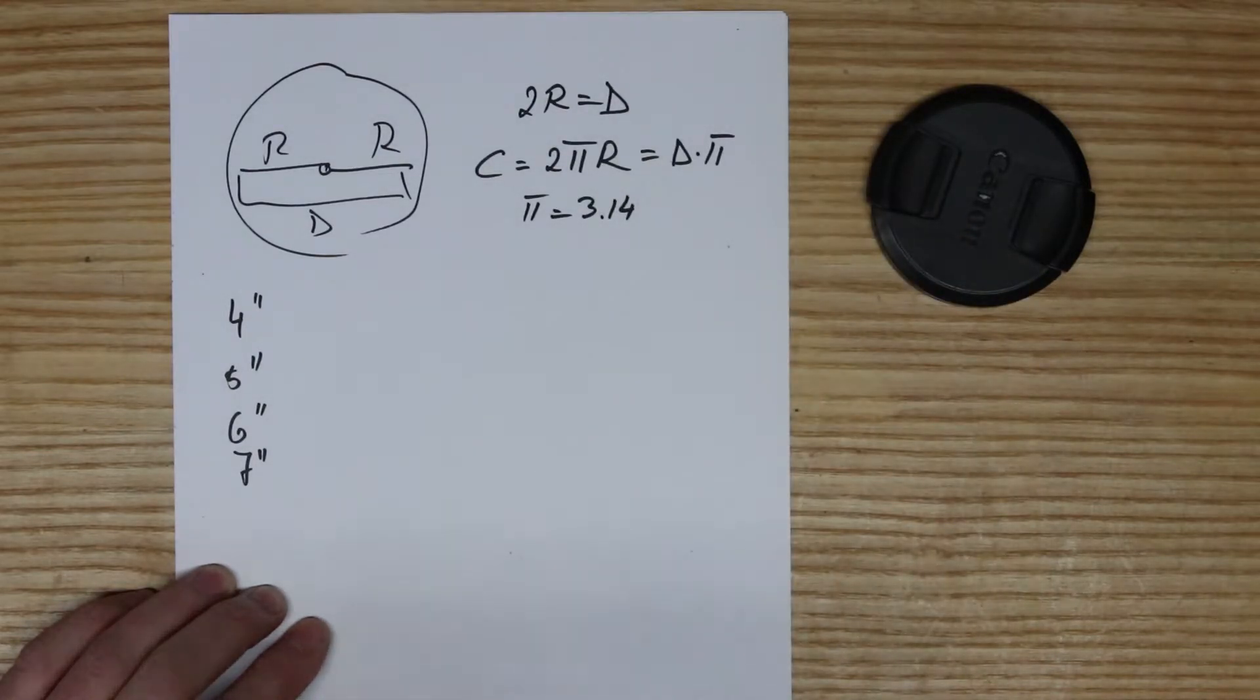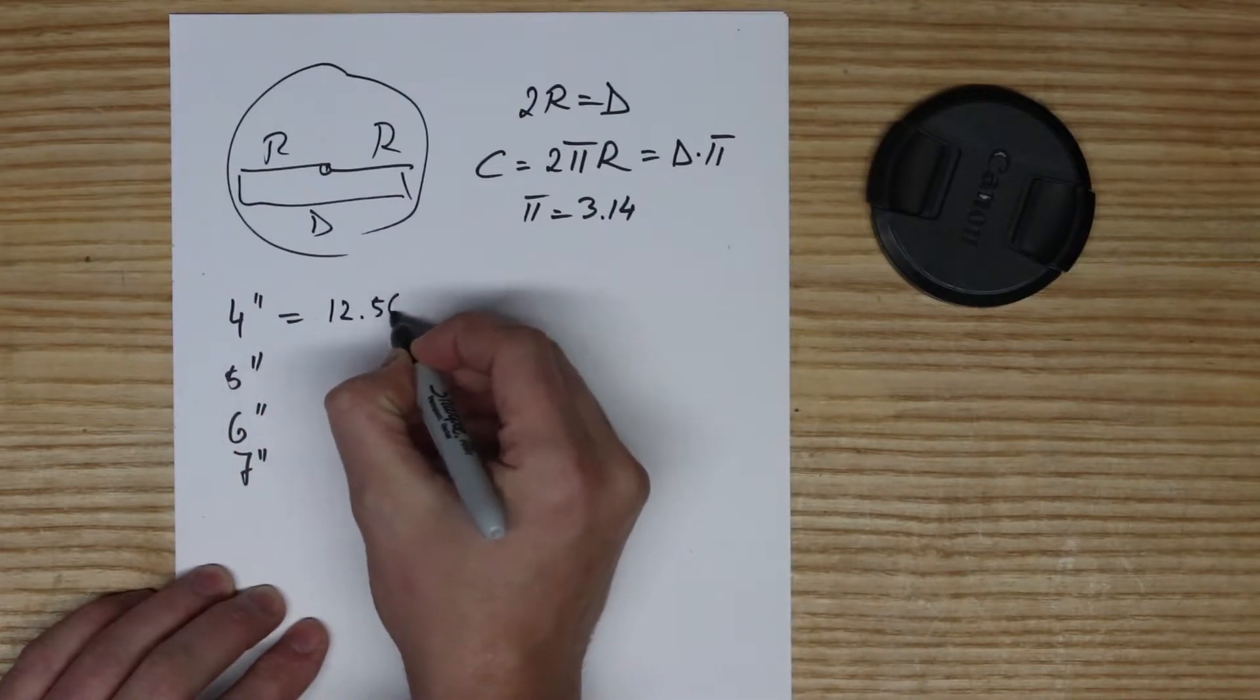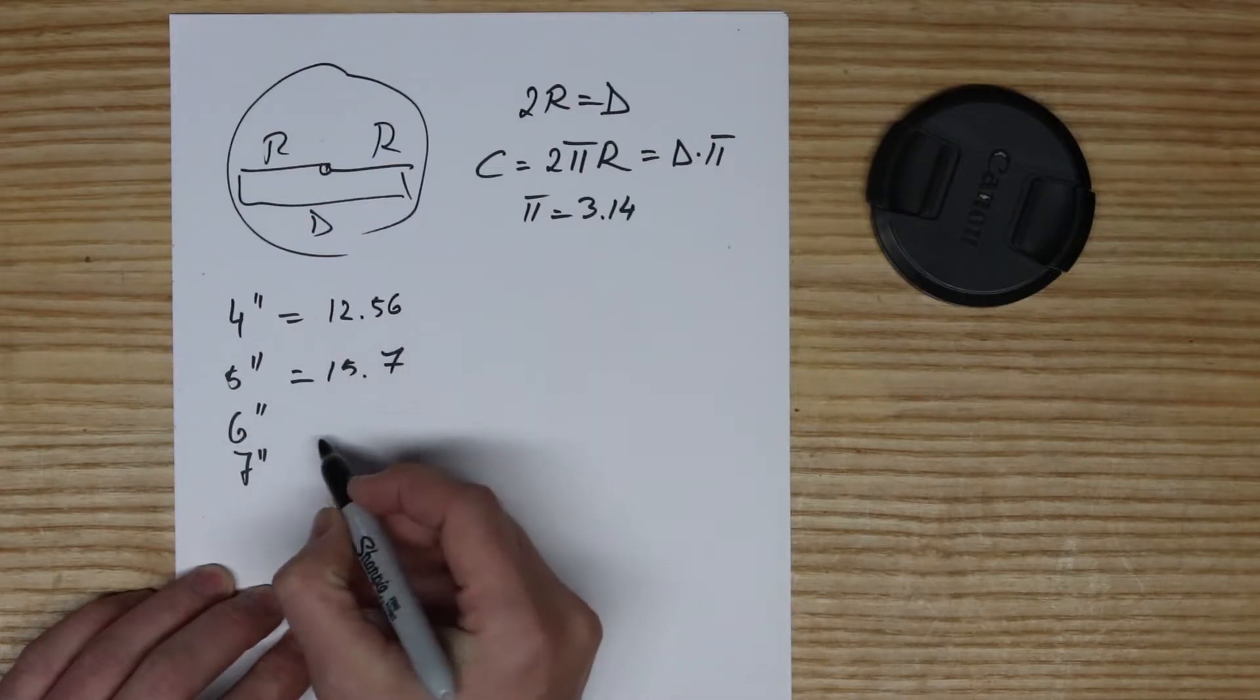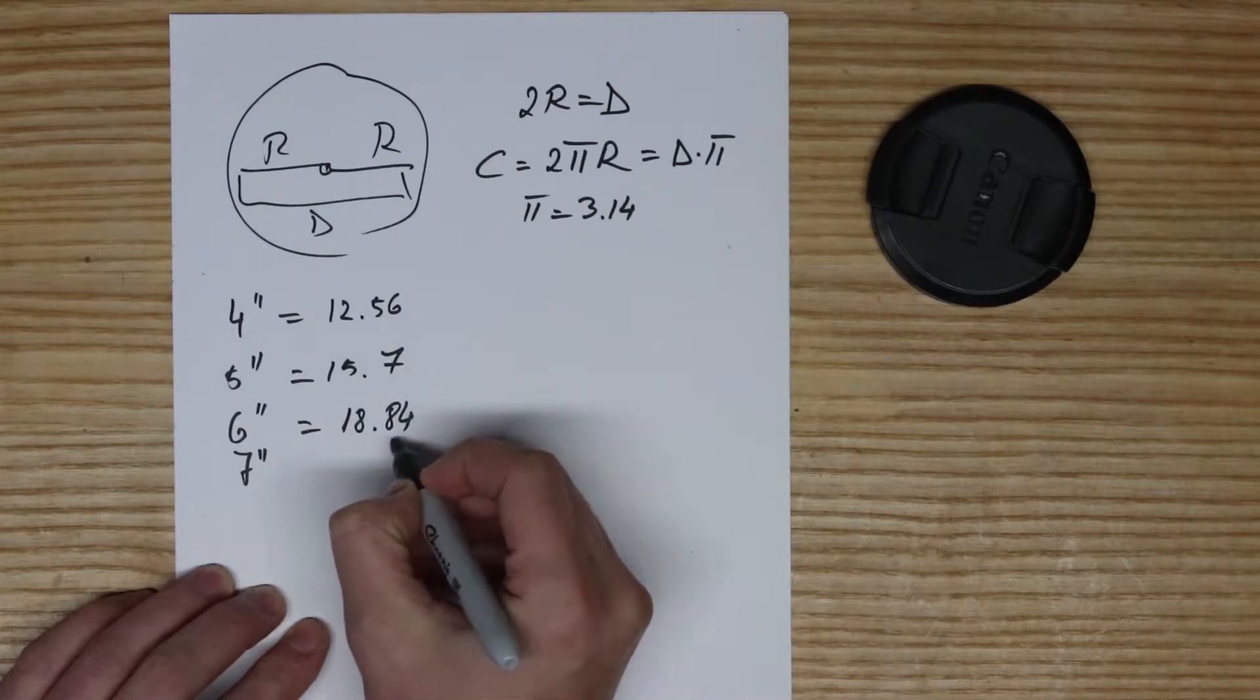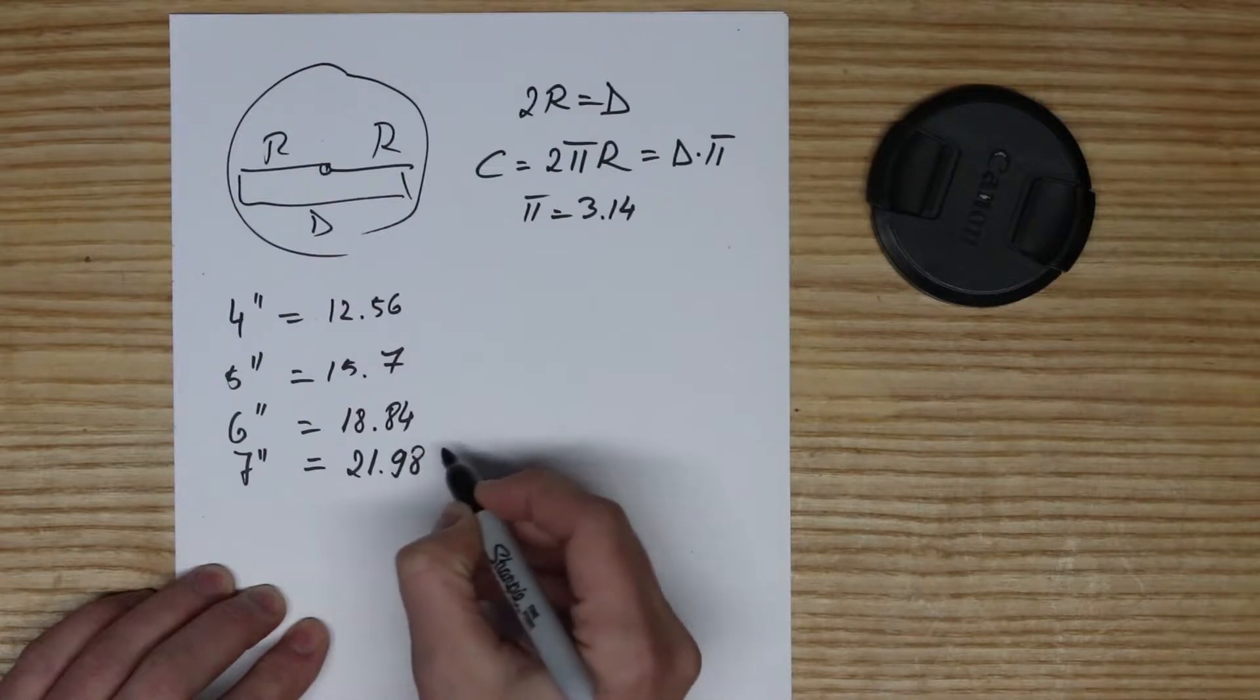What you do is you measure your wheel. Let's say you have a four inch. For four inch, if you multiply 3.14 by four, you end up with 12.56. For five is 15.7. For six is 18.84. And for seven is 21.98.